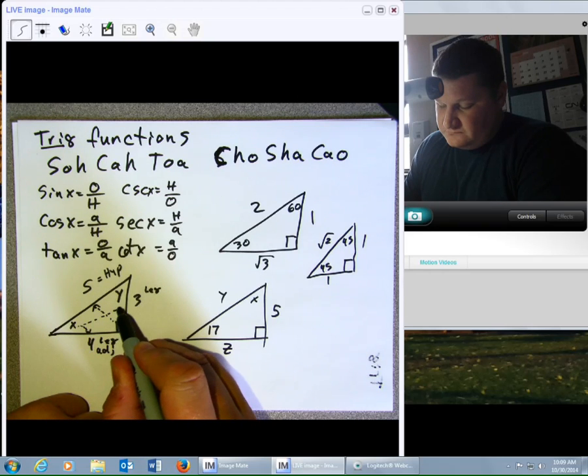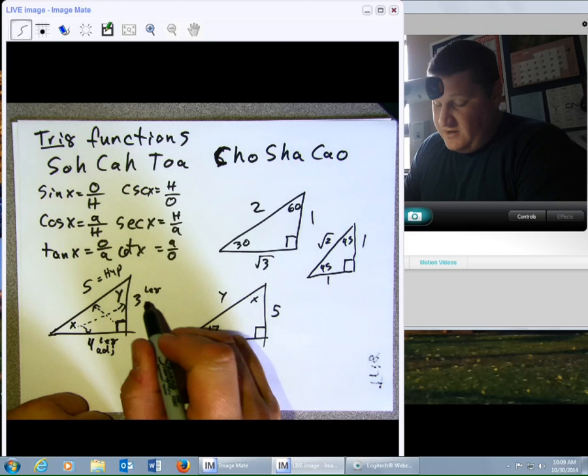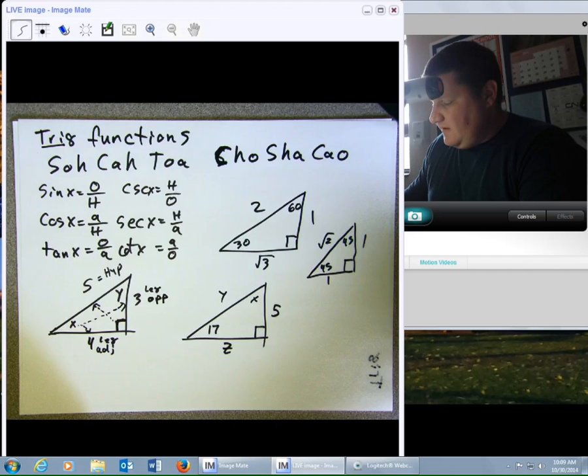Versus, over here, this side, this 3, it's all the way across the triangle from it, so we would consider it opposite.